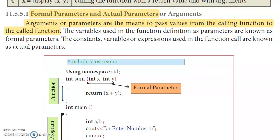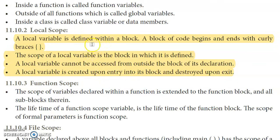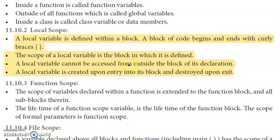Fifth question: write a note on local scope. From page 201, local scope is defined within one block. A block of code is enclosed in open and close brackets. A local variable's scope is limited to that one block — it is created when the block opens and destroyed when the block closes.